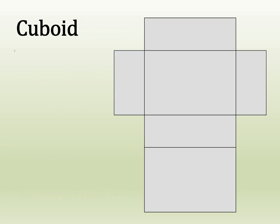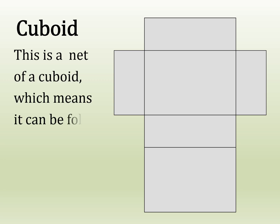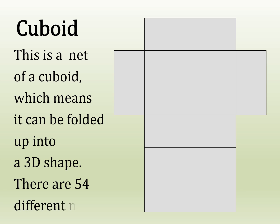This is a net of a cuboid, which means it can be folded up into a 3D shape. There are approximately 54 different nets for a cuboid.